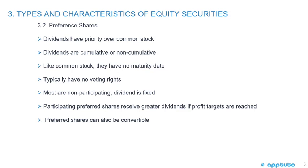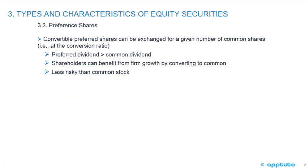Participating preferred shares receive greater dividends if profit targets are reached. Finally, preferred shares can also be convertible. Convertible preferred shares can be exchanged for a given number of common shares — i.e., there's a conversion ratio. The preferred dividend is typically greater than the common dividend. Shareholders can benefit from growth by converting to common, and convertible preferred is less risky than common stock.